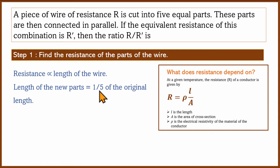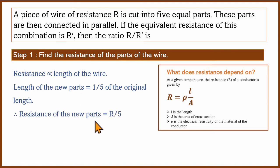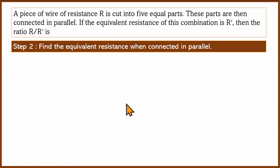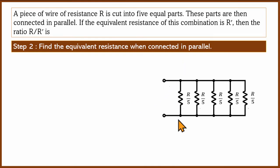Since resistance is directly proportional to length, and each part is 1/5 of the original length, the resistance of each part is R/5. So each of the 5 equal parts has resistance R/5.